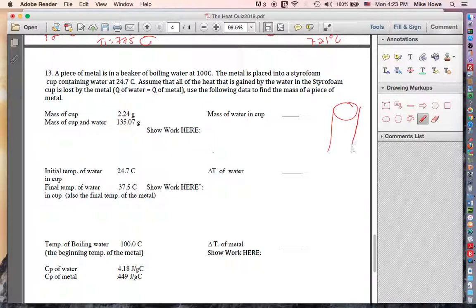You've got a beaker sitting here. Here's the beaker. Here's water in it. It's boiling water. There's bubbles in it. And in the bottom of the water, there's a piece of metal. A piece of metal sitting there. And we're going to take that water and put it into a styrofoam cup. So here's a styrofoam cup. It's sitting here. And it's got water in it. So we're going to take the metal out of here and put it in there.